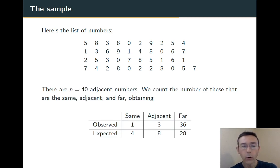There are 40 total pairs. And so 1 in 10 there is 4. We expect to get back-to-back ones to be identical 4 times. Similarly, we expect back-to-back ones to be different by just 1 8 times. And we expect them to be further apart 28 times.